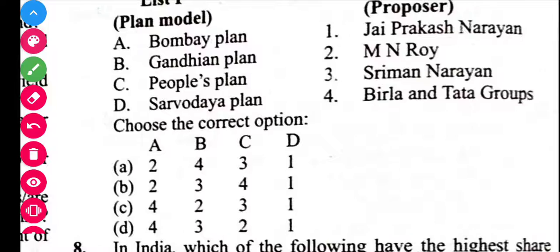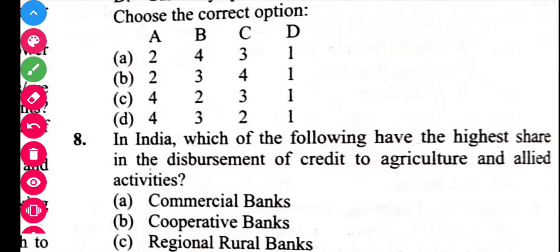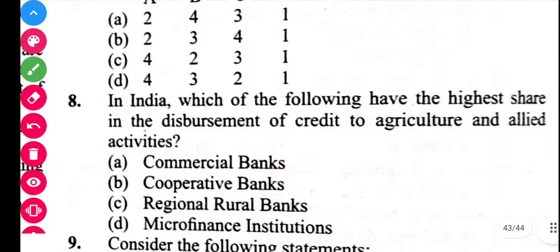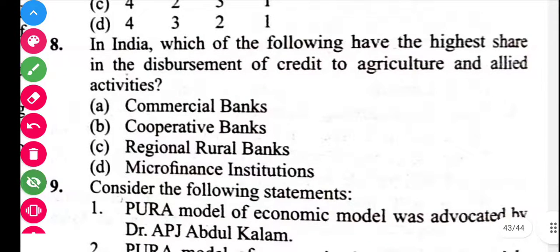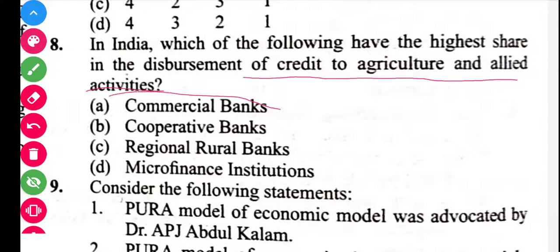Next question: in India, which of the following has the highest share in the disbursement of credit to agriculture and allied activities? The answer is commercial banks, so the answer is E.